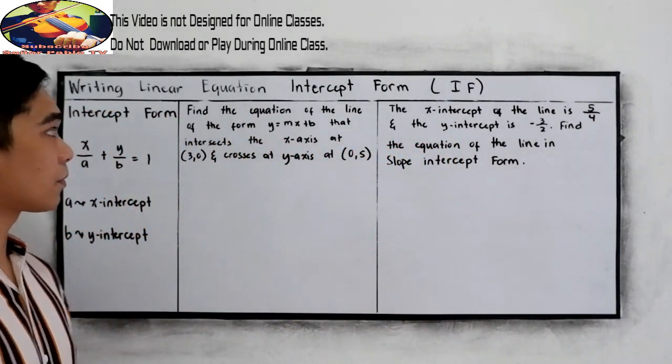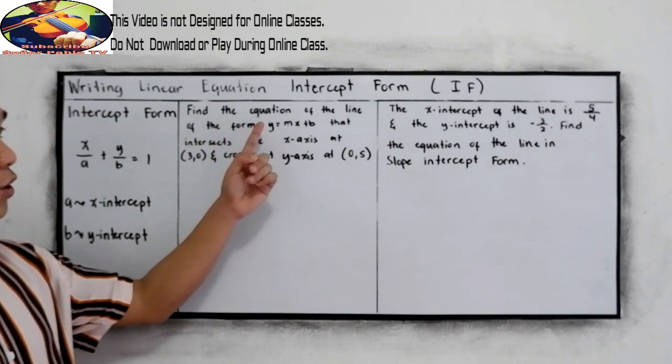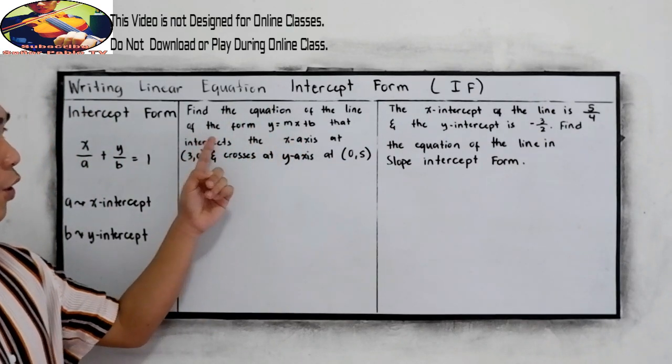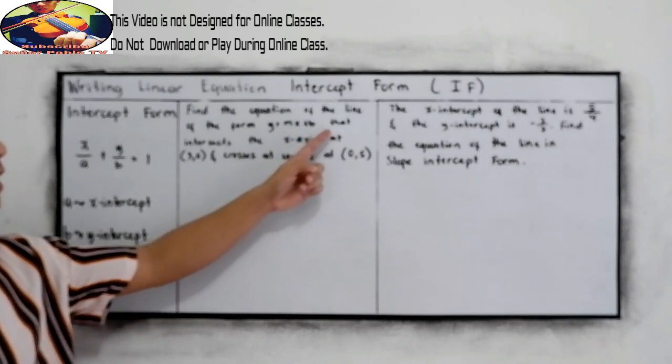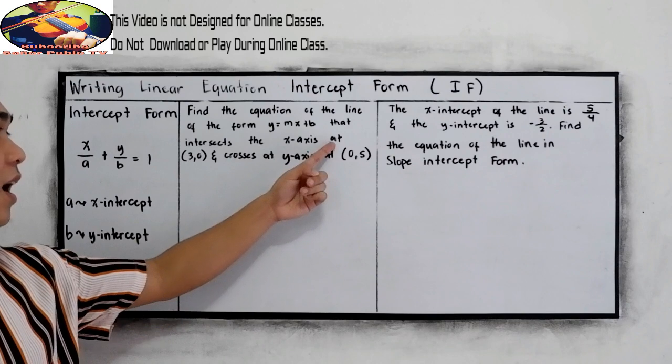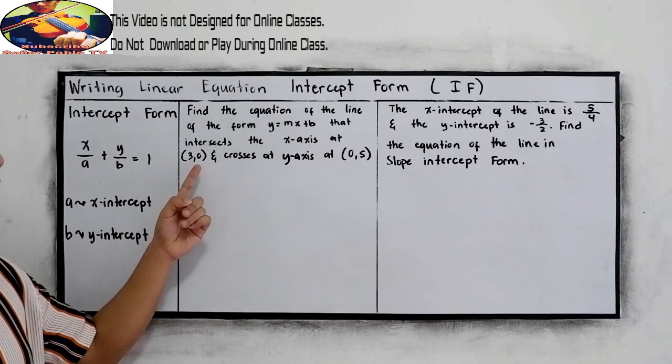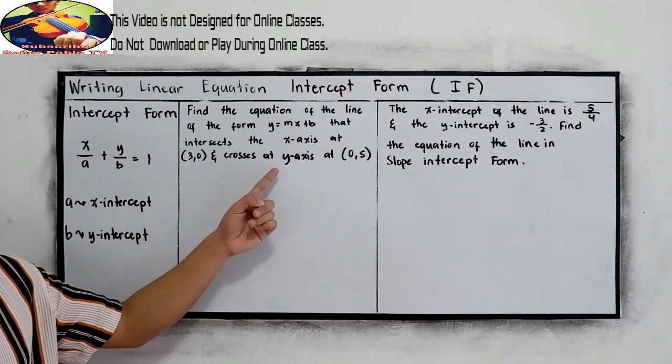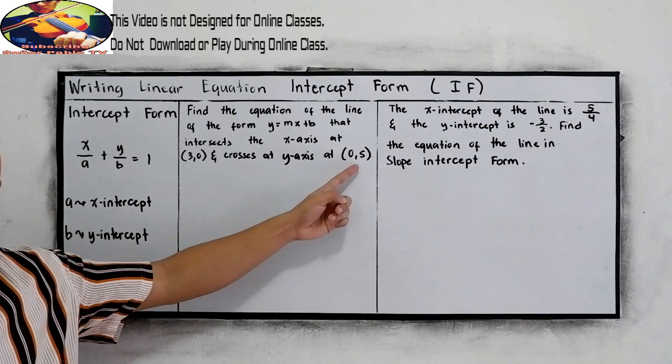Number one: find the equation of the line of the form y equals mx plus b that intersects the x-axis at (3,0) and crosses the y-axis at (0,5).